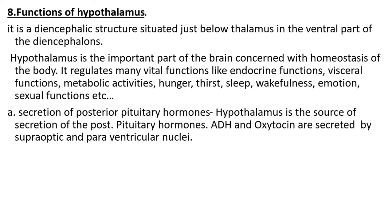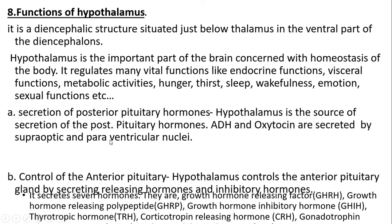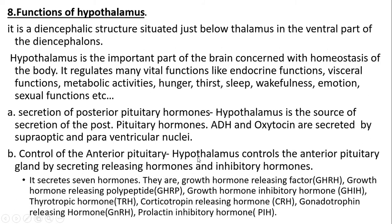Secretion of posterior inhibitory hormones: the hypothalamus is a source of secretion of ADH and oxytocin by the supraoptic and paraventricular nuclei. Control of the pituitary gland: the hypothalamus controls the pituitary gland by secreting releasing hormones and inhibitory hormones. It secretes seven hormones: growth hormone-releasing hormone, growth hormone-releasing polypeptide, growth hormone-inhibitory hormone, thyrotropin-releasing hormone, corticotrophin-releasing hormone, gonadotrophin-releasing hormone, and prolactin-inhibiting hormone.